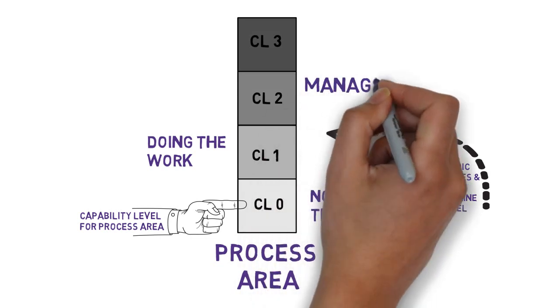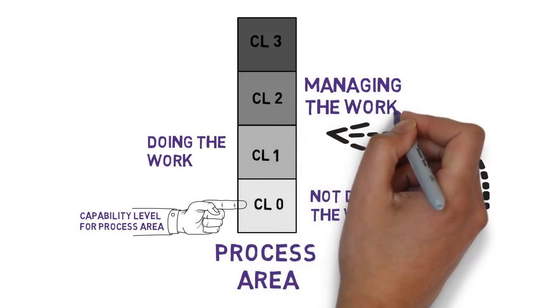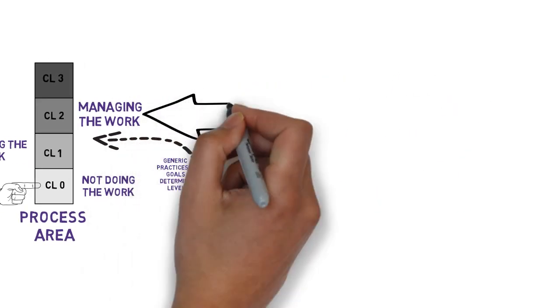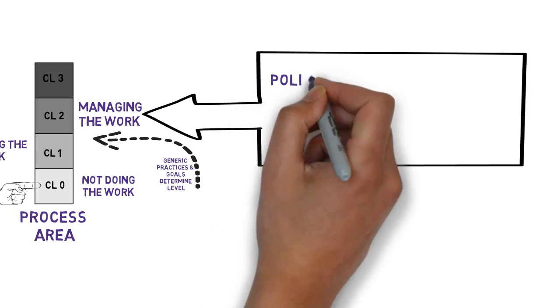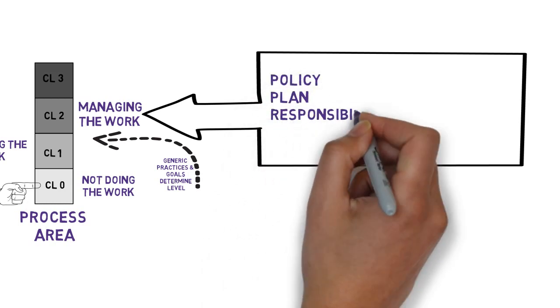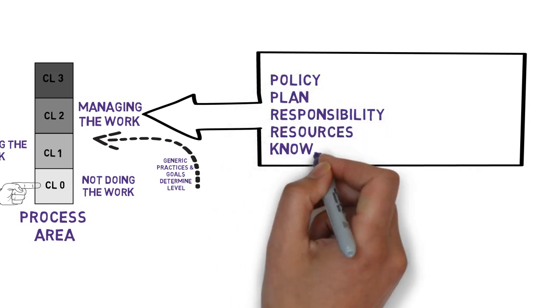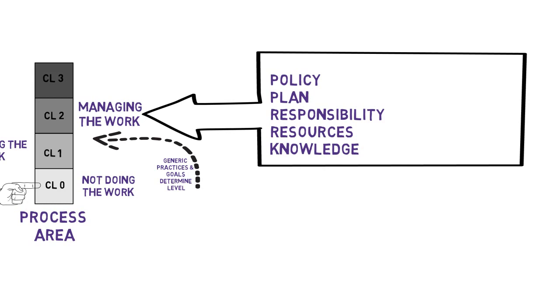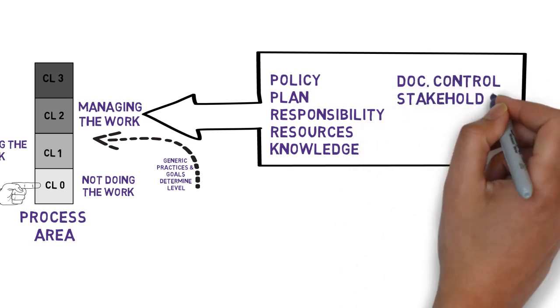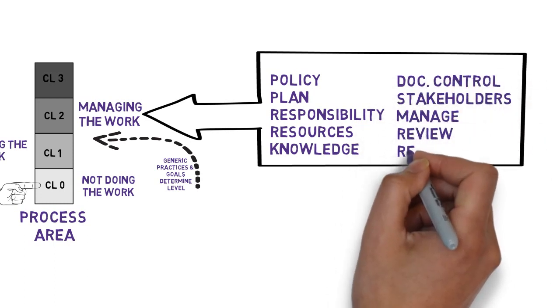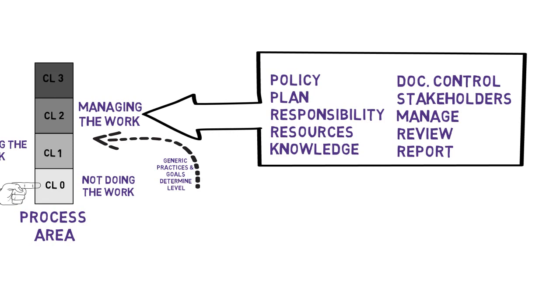Level two is about managing the work that you're doing. Work that is managed should be authorized by some sort of policy statement or directive, have a plan for going about it, have the resources needed to do the work, and someone assigned to actually do it. Those doing the work ought to know how to do it, exercise some control over what they build and any documentation used to build it, make sure that key stakeholders are involved or at least know what's going on, and manage against the plan for the work.